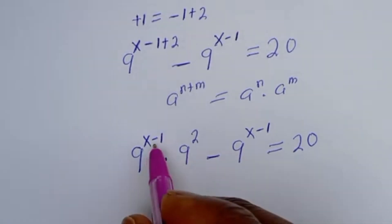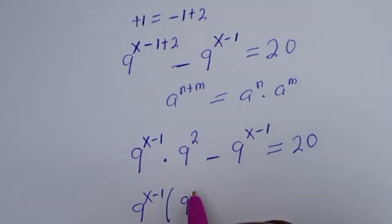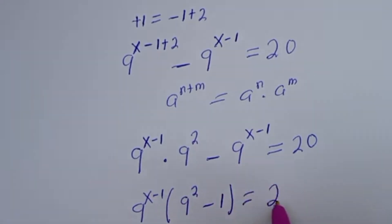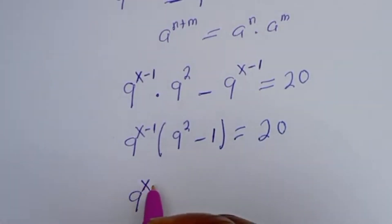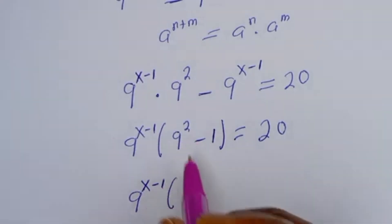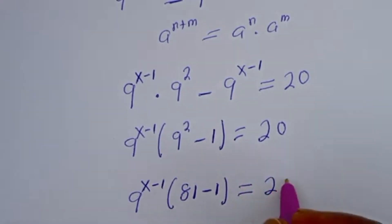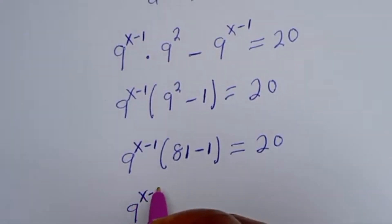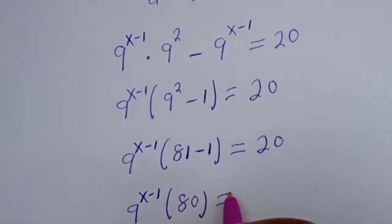At this point, 9 to the power of x minus 1 is common — let's bring it out. We have 9 to the power of x minus 1, then in brackets: if you divide this by this we have 9 squared, minus 1, is equal to 20. This is 9 to the power of x minus 1, bracket, 81 minus 1, that is 80, is equal to 20.